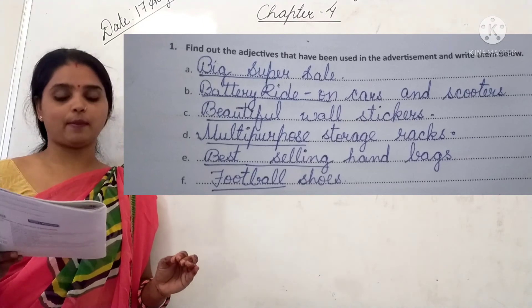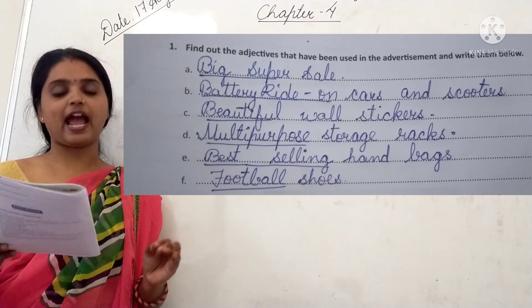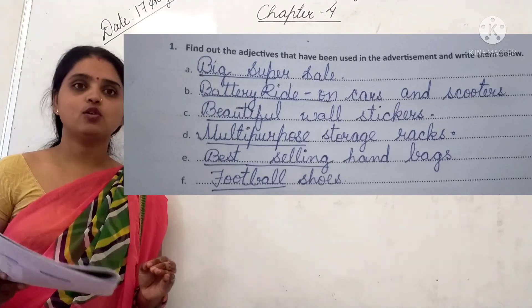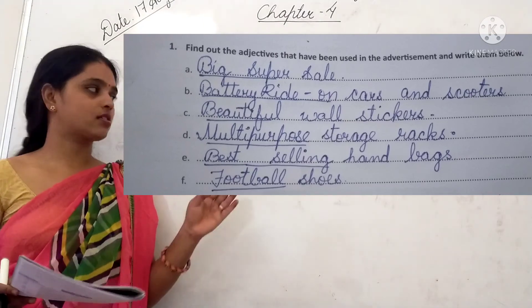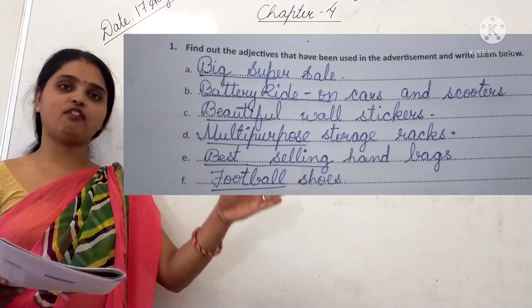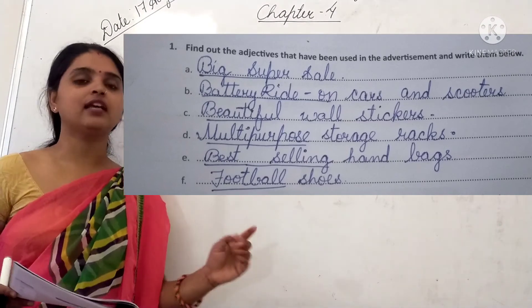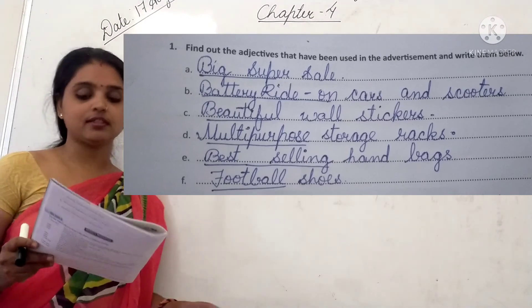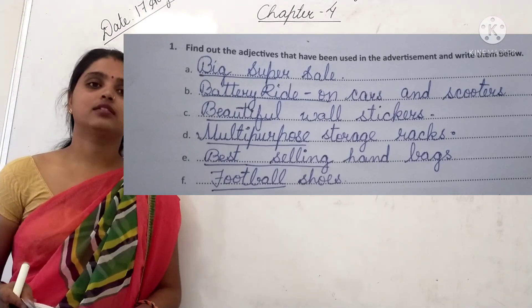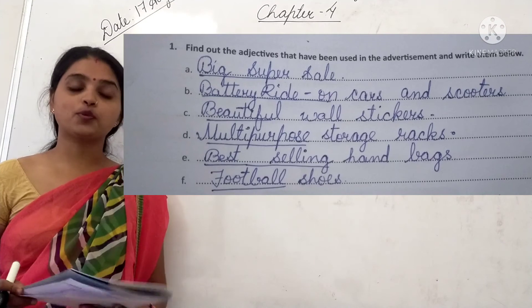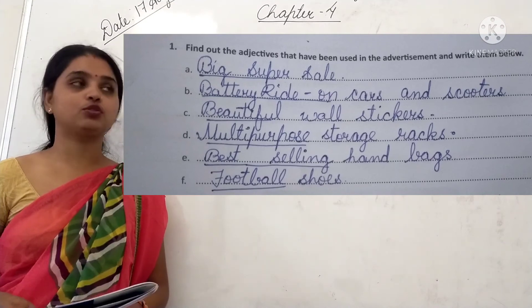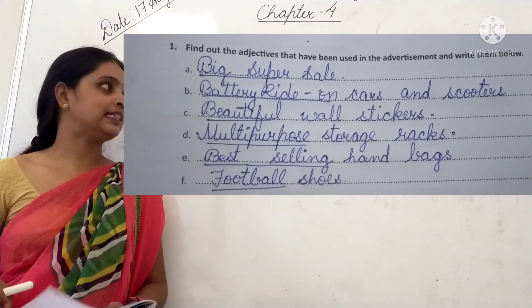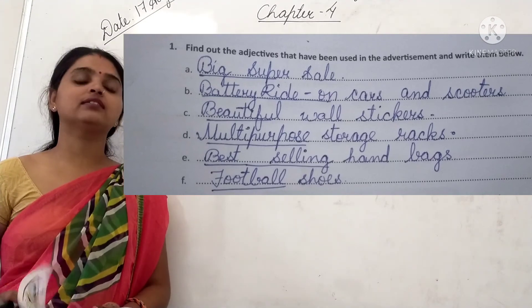Next: 'best selling handbags' — we write the full sentence and underline the adjective, which is 'best selling.' I hope students you have understood this.